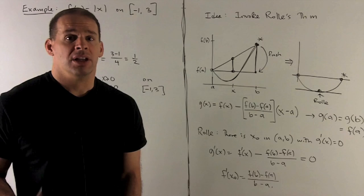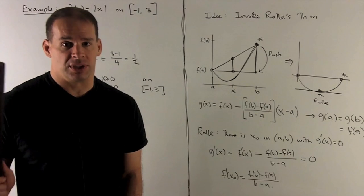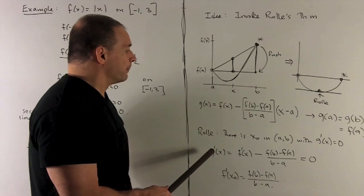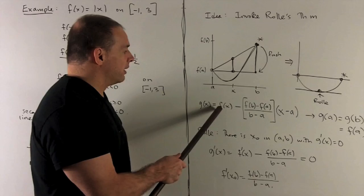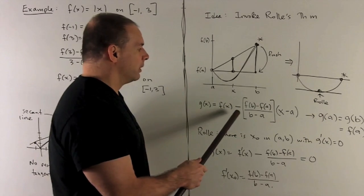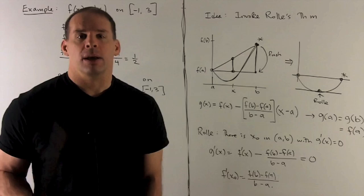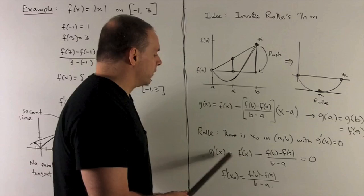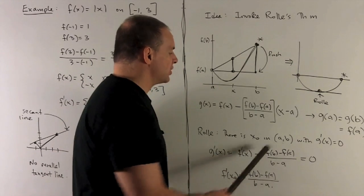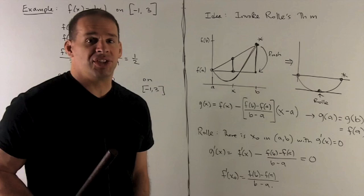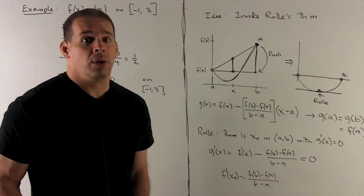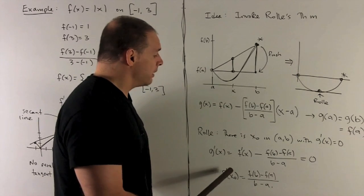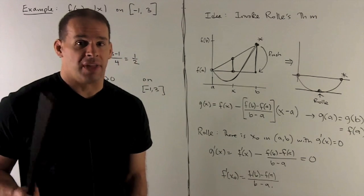By Rolle's theorem, there's some point x₀ such that g'(x₀) = 0. Taking the derivative of g gives f'(x) minus the slope of the secant line — since (f(b) - f(a)) / (b - a) is just a constant and the derivative of (x - a) is 1. Rolle's theorem says g'(x₀) = 0, so plugging in x₀ gives f'(x₀) = (f(b) - f(a)) / (b - a), the slope of the secant line. That's the Mean Value Theorem.